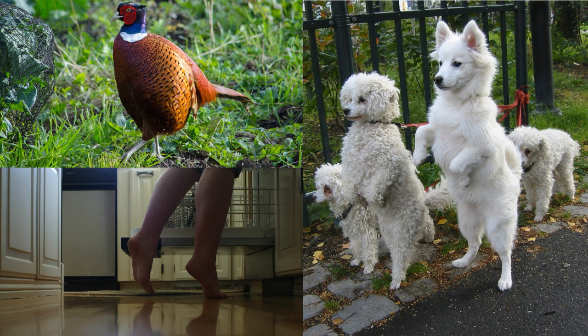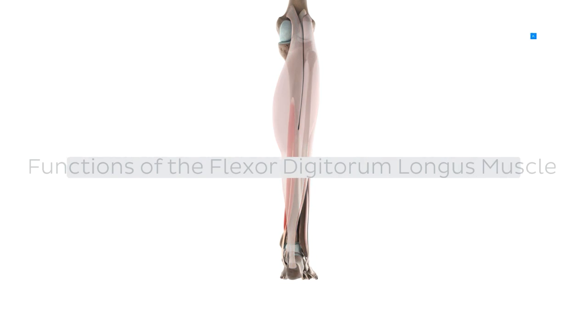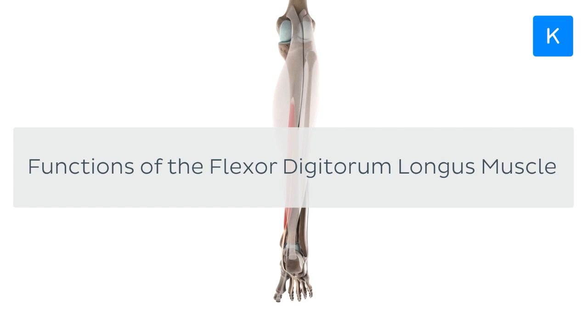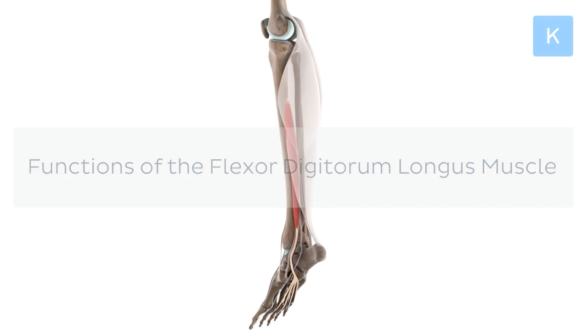What do these three images have in common? At first it might be difficult to see the connection, but after you get past the dog's gracefulness and the pheasant's sense of fashion, you can observe that they're all curling and standing on their toes. One muscle contributing to these actions in humans is the flexor digitorum longus, and in this tutorial we'll learn all about its functions.